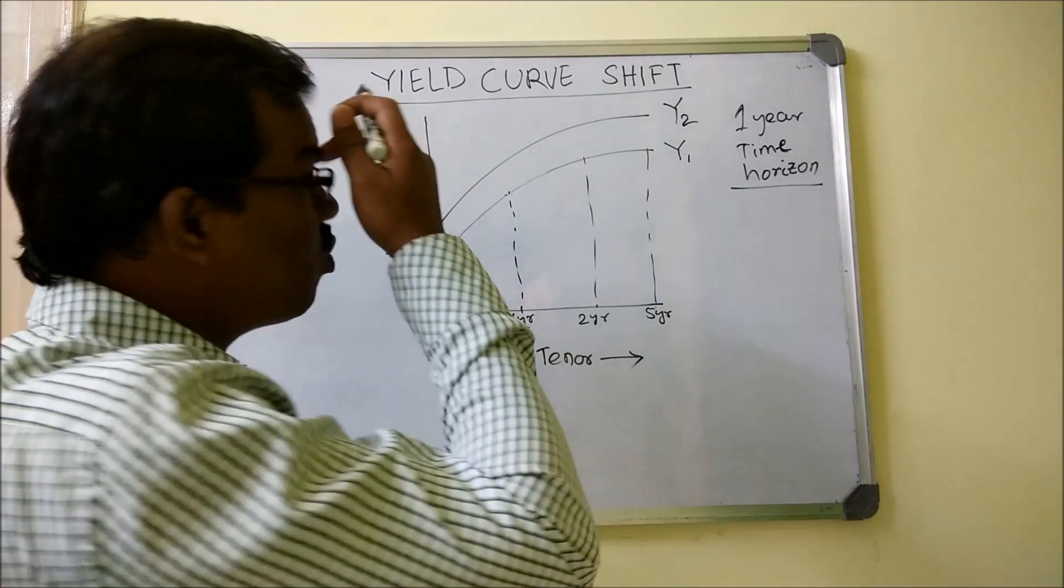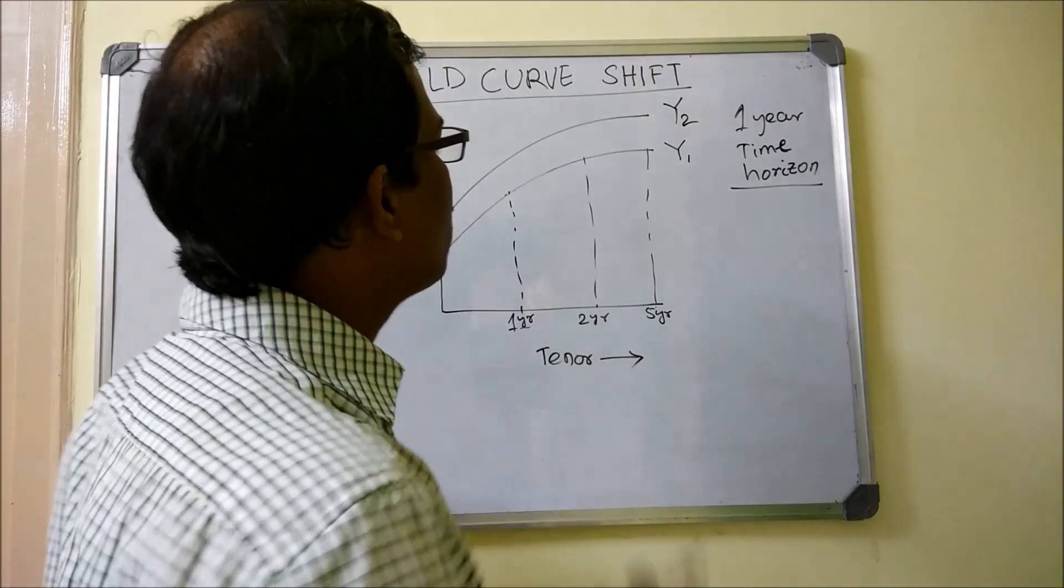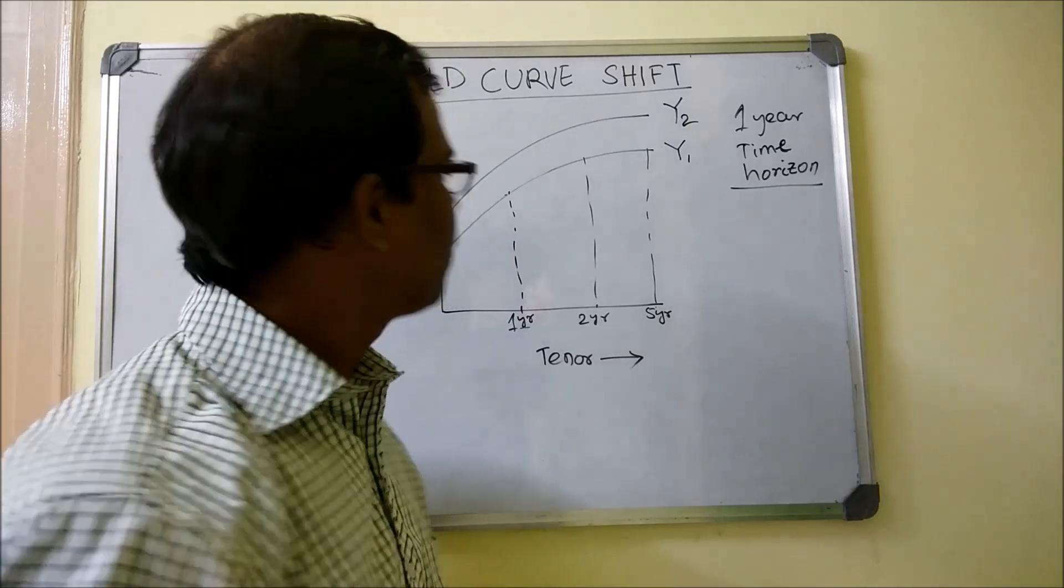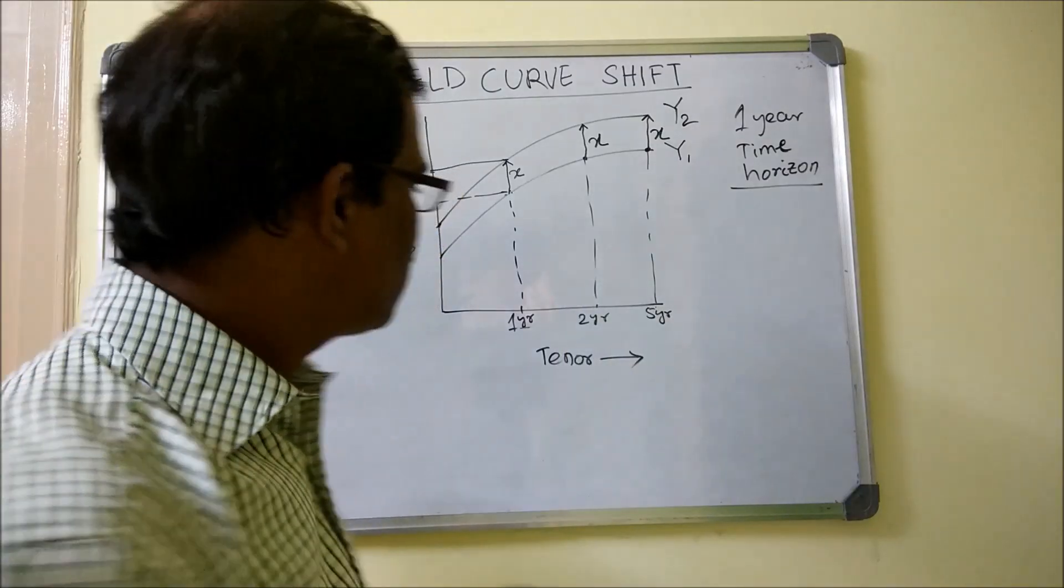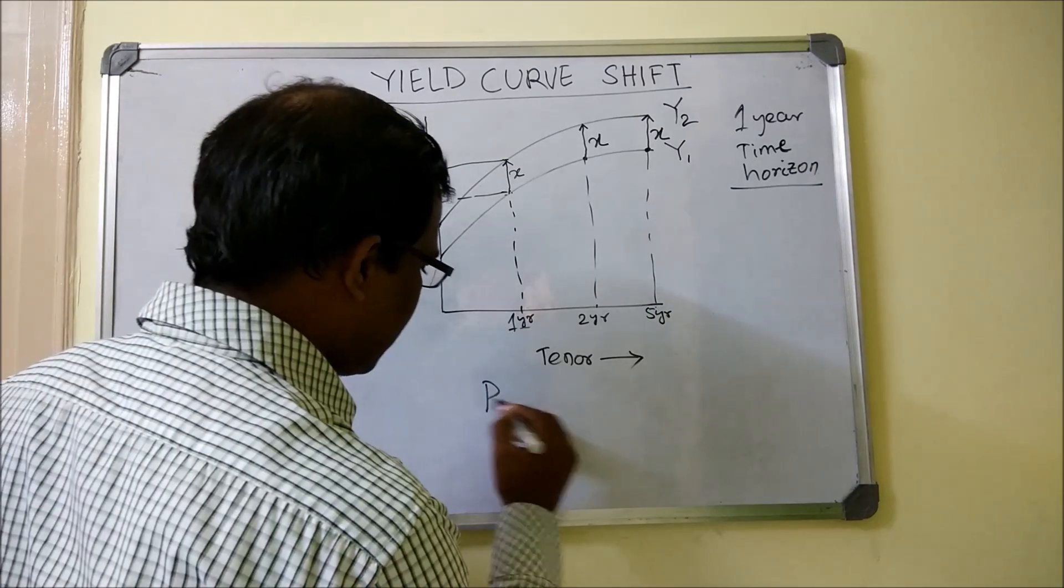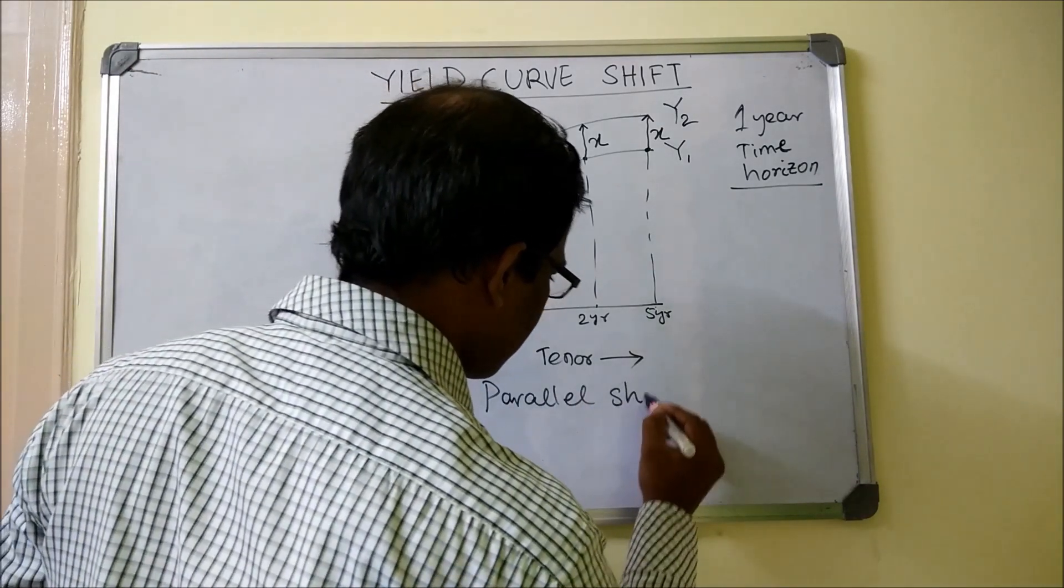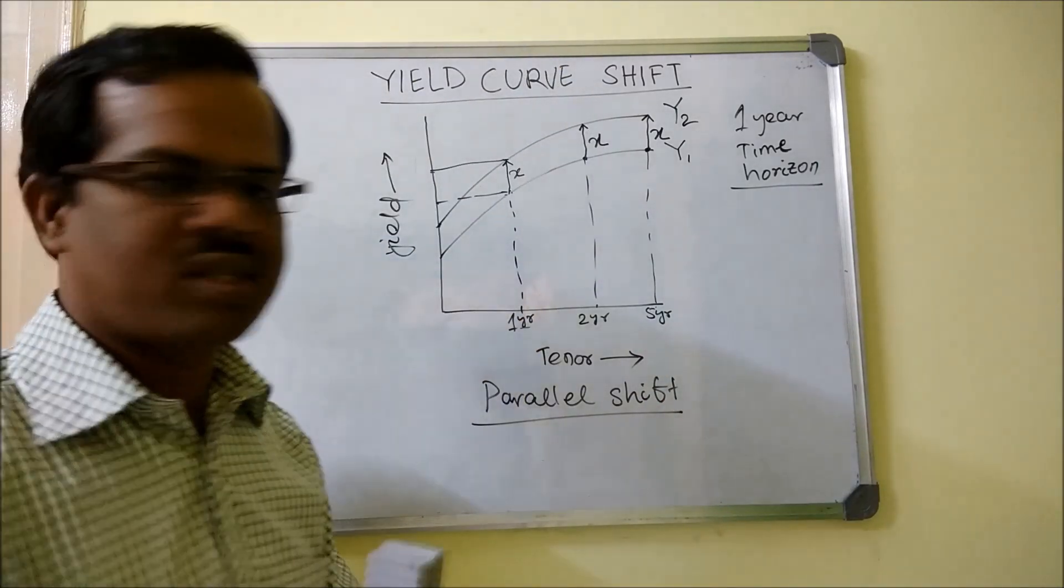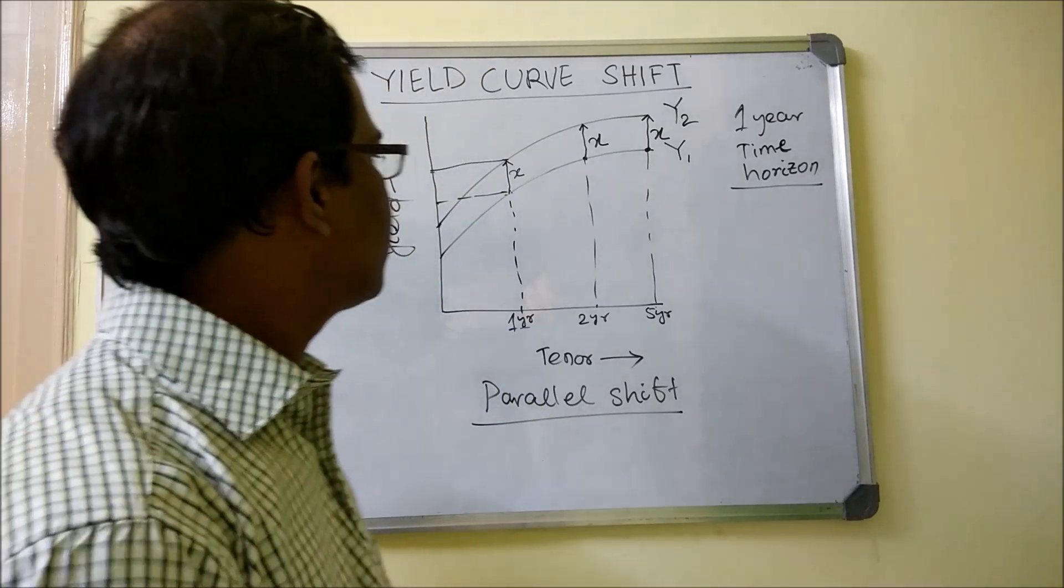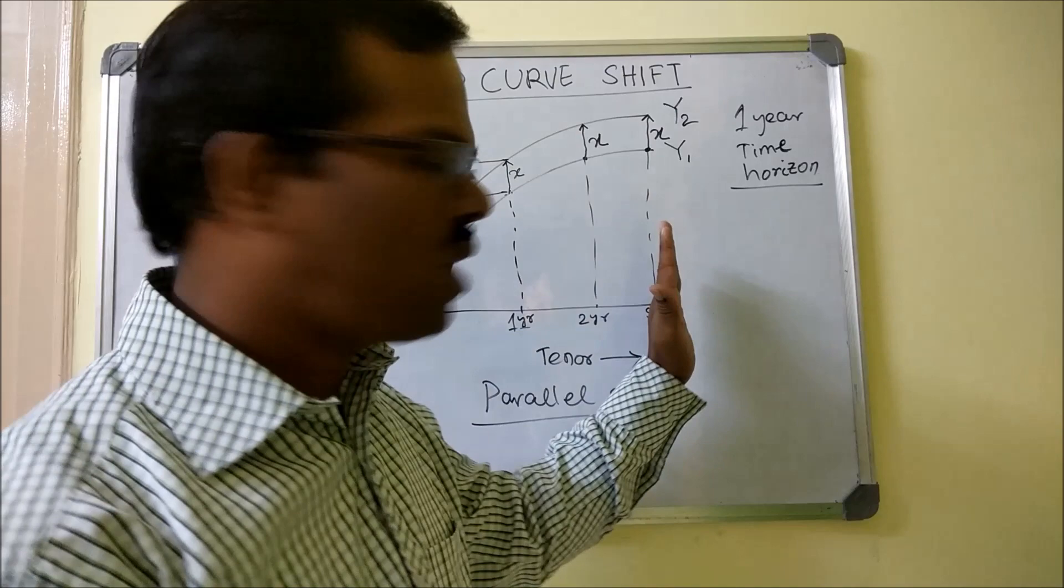So one year down the line, the yield curve is going to look something like our Y2. There is a difference in the yields. This is known as parallel shift, where there is an equal amount of change across the tenor.